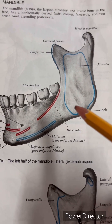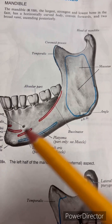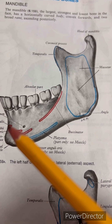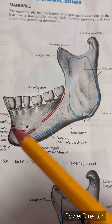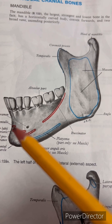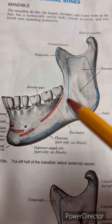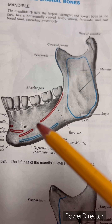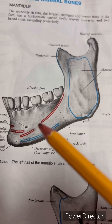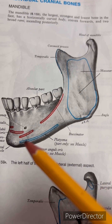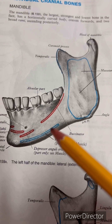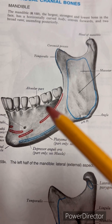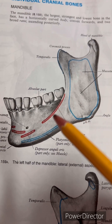Muscles attached to the body of the mandible are as follows. Just above the mental tubercle is the incisive fossa. To this shallow incisive fossa, the mentalis muscle is attached. To the posterior end of the oblique line are attached depressor labii inferioris and depressor anguli oris muscles. The platysma is attached just to the bone below them. Just below the alveolar border, buccinator muscle has a linear attachment.